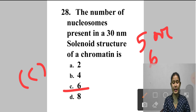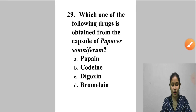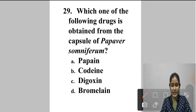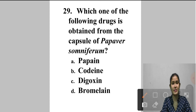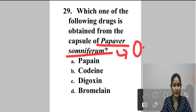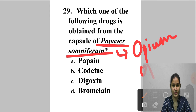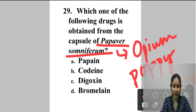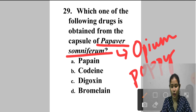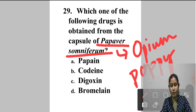Question 29: Which drug is obtained from the capsule of Papaver somniferum? Papaver somniferum is the opium poppy plant. Opium is the source of many narcotics including morphine, thebaine, codeine, papaverine, and noscapine. Among the options — papain, codeine, digoxin, bromelain — codeine is obtained from Papaver somniferum. Answer is option B — codeine.